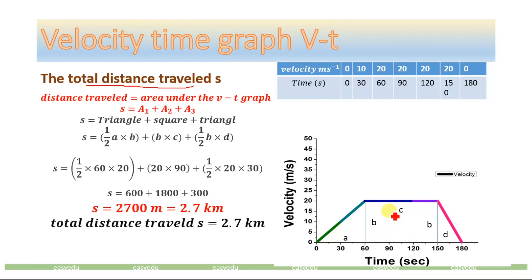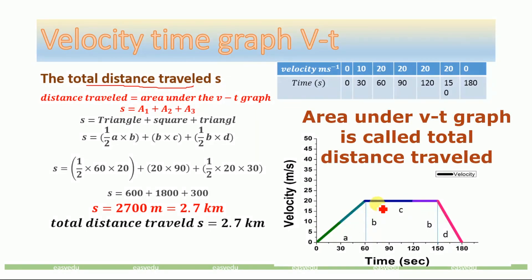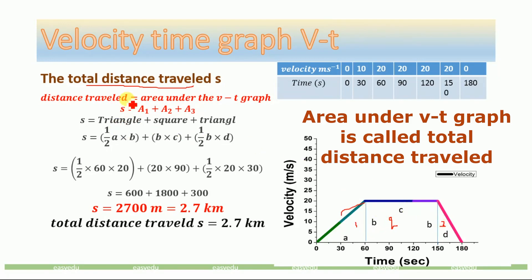From this velocity-time graph, we will determine the total distance traveled. The area under the v-t graph curve is equal to the distance traveled. We will calculate this area to find the total distance traveled. For calculating the total area, we divide the whole area into three regions: region 1, region 2, and region 3. The total distance traveled S equals A1 plus A2 plus A3.